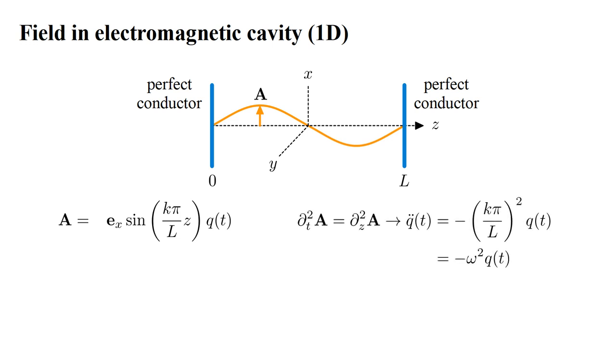For this geometry, the wave equation requires that the second derivative in t of A equals the second derivative in z of A. Performing the derivatives and canceling common factors, we obtain q̈ = -ω²q, where ω = kπ/L.